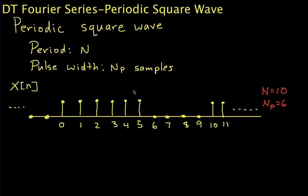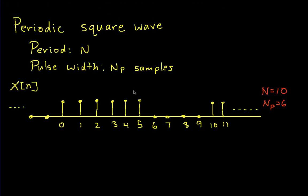Hello and welcome to this video in which we find the discrete-time Fourier series coefficients for a periodic square wave. This turns out to be a fairly useful exercise for a couple reasons. One is that periodic square waves show up a lot, and if you know the Fourier series coefficients for these square waves, it makes a lot of interesting analysis things possible that you can do with the properties of the Fourier series and the Fourier transform. This will also be instructive because it shows how to do the analysis.